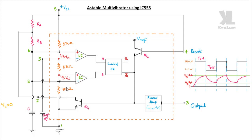In the initial stage, the upper comparator inverting terminal is connected to the power supply, and the upper comparator non-inverting terminal is connected to zero voltage. The lower comparator positive terminal is also connected to zero voltage. Therefore, the lower comparator will produce an output of high (logic 1), and the upper comparator will produce a logic zero as output.